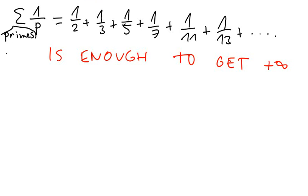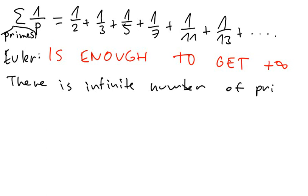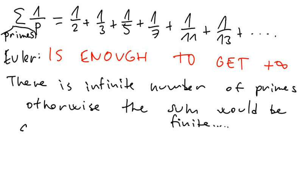So this is one of the famous results of Euler. And also it proves that there is infinite number of primes. Finite number of primes, because if the number of primes would be finite, then the sum would be finite, but how can you sum a finite number of numbers to get something infinite? Otherwise the sum would be finite.